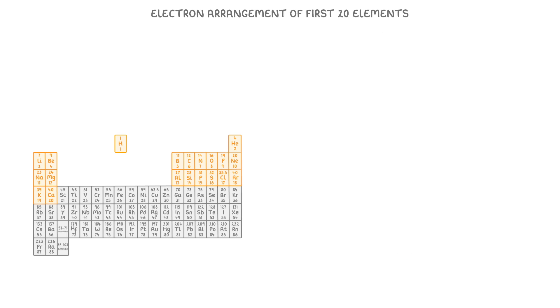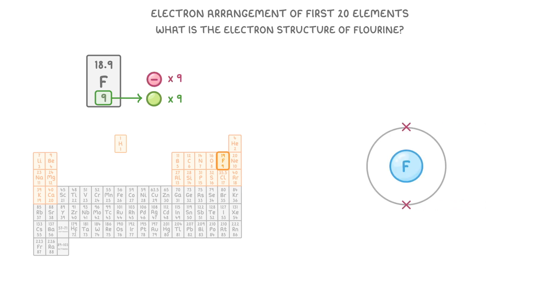As a last example, let's look at fluorine. Its atomic number is 9, so there are 9 protons and 9 electrons. Meaning we'd have 2 electrons in the first shell and 7 in the second, which we'd write as 2, 7.